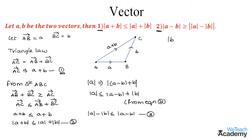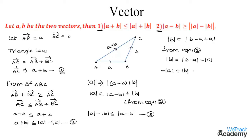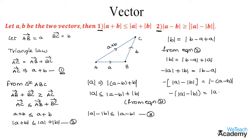Similarly, let us consider |b| and add and subtract a, giving us |(b - a) + a|. From equation two, |b| ≤ |b - a| + |a|. Transferring |a| to the other side: -|a| + |b| ≤ |b - a|, which means -(|a| - |b|) ≤ |b - a|. Taking minus as a common factor on the right side gives -(a - b), and since any negative value inside the modulus represents a positive value, we get -(|a| - |b|) ≤ |a - b|. This is equation four.